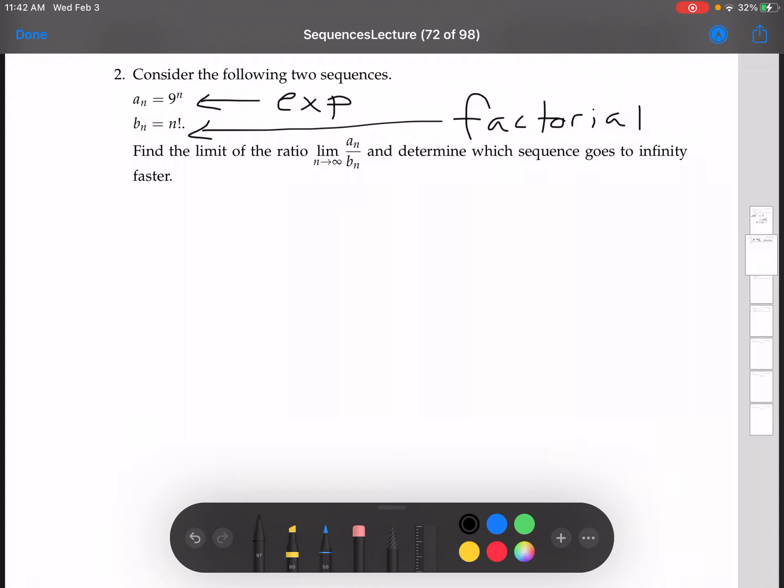From the notes and learning goals, exponentials go to infinity slower than factorials. So again, the factorial wins out. It is the dominant term.